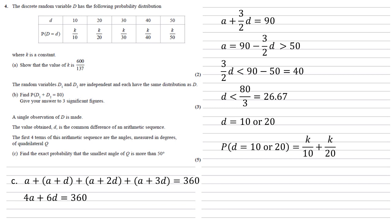This equals the probability of 10, which is K over 10, plus the probability of 20, which is K over 20. Putting our K value of 600 over 137 into that, we get 90 over 137. Note that it's asked for the exact probability, so we've left it as a fraction.